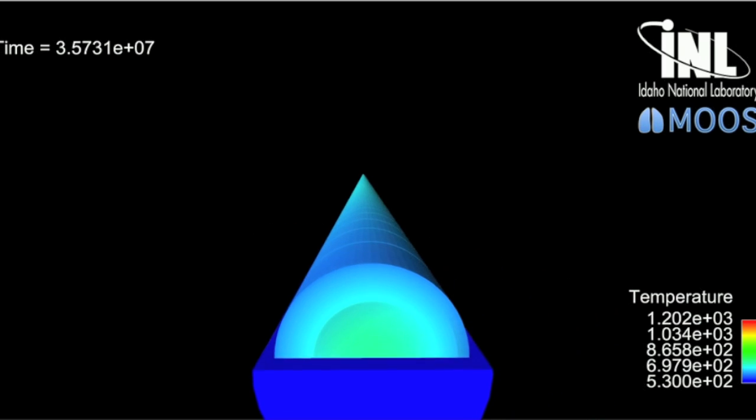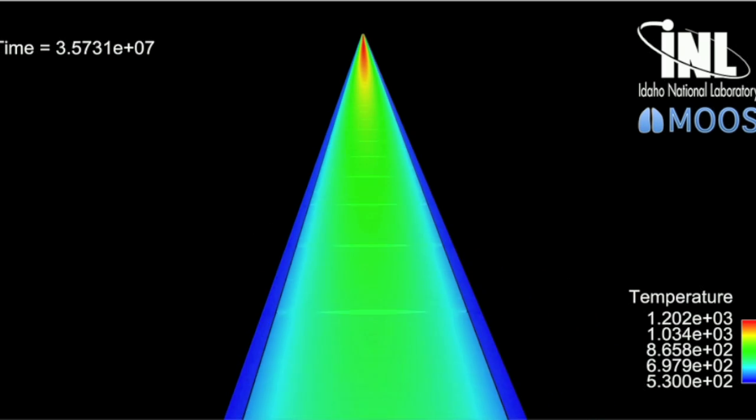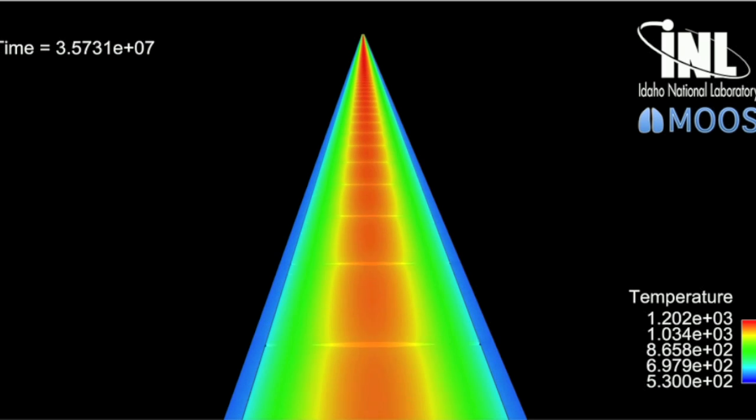We're going to fly down the full length of the rod so that you can get a good understanding of just how immense this calculation really was. There's 320 total pellets here, which is analogous to what is actually in an operating reactor in the United States. This simulation simulates a little bit over a year inside of a reactor, about 14 months.